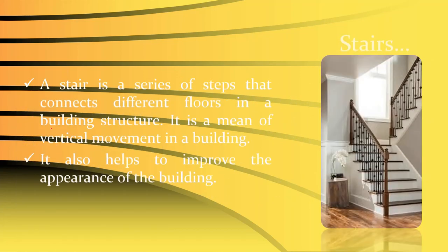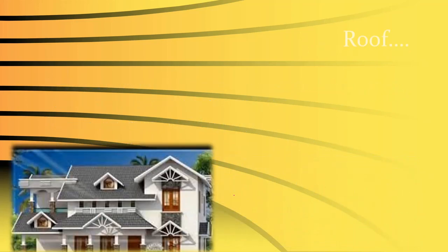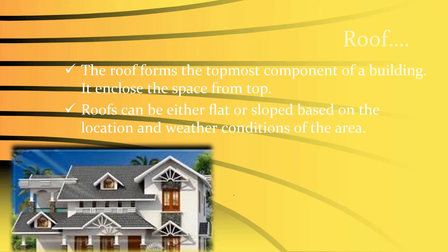Stairs are a series of steps connecting different floors in a building structure — they are the means of vertical movement and also improve the appearance of the building. Parapet walls are short walls extended around openings like terraces or galleries; they act as safety walls for people and improve the appearance of the structure. The roof forms the topmost component of the building, enclosing space from the top, and can be flat or sloped based on location and weather — sloped roofs are preferred in heavy rainfall regions to drain water.